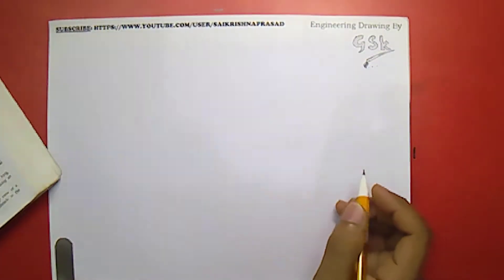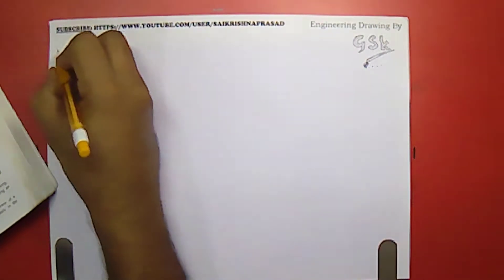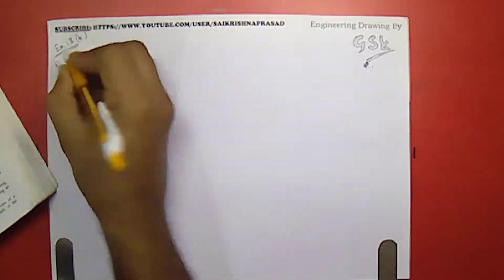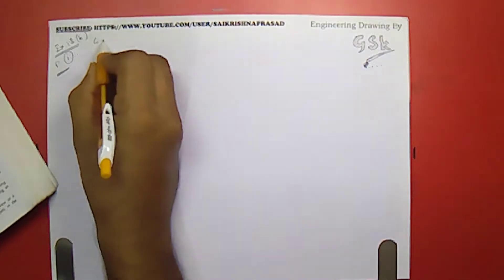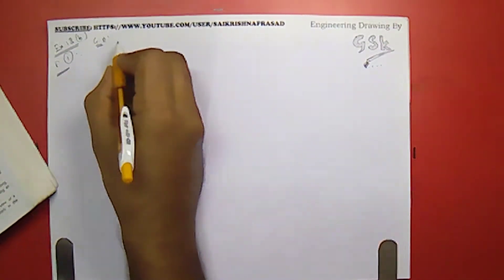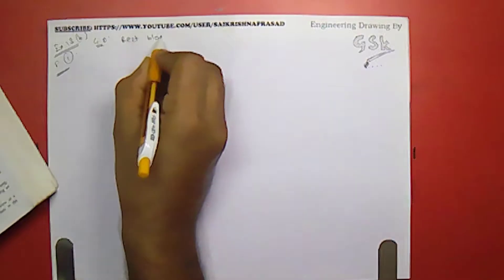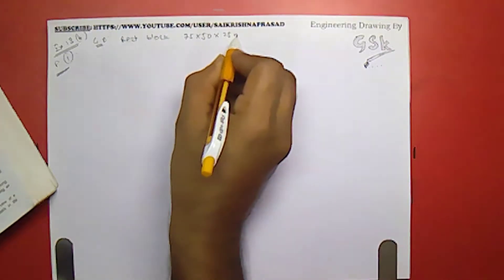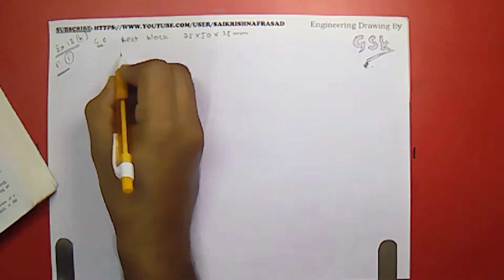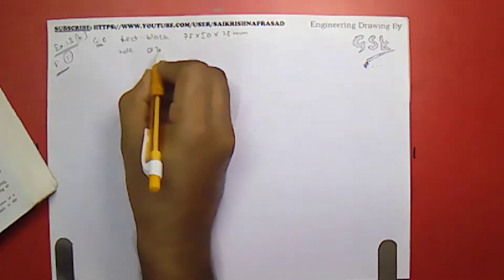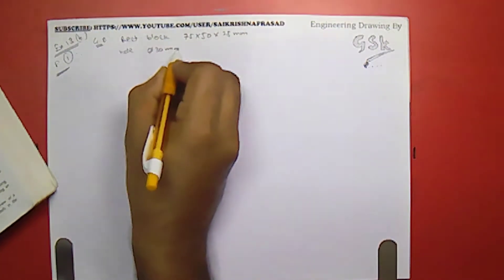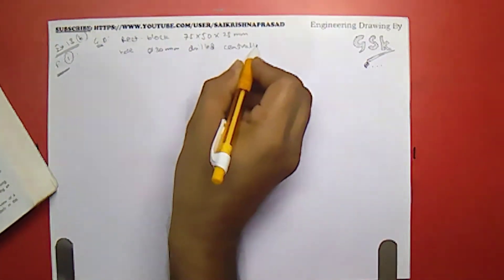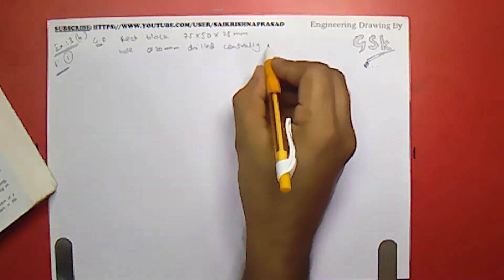So let me write down the given data for this problem. This would be exercise 13B problem number 1 and the given data for this is rectangular block of dimensions 75, 50 and 25, and it has a hole of diameter 30mm drilled centrally through largest face.